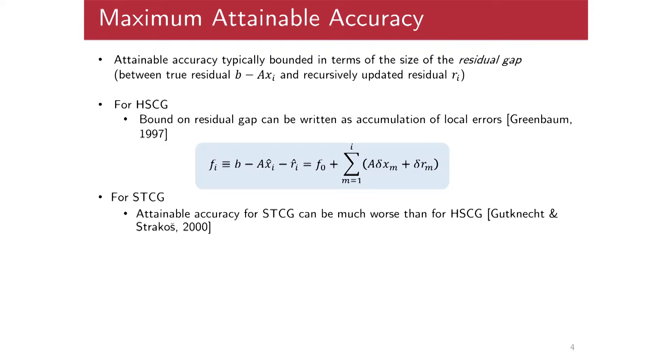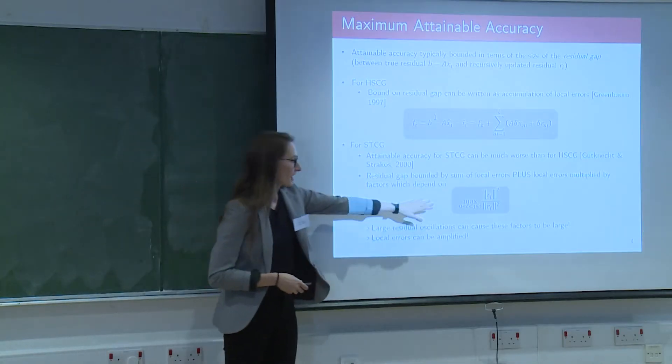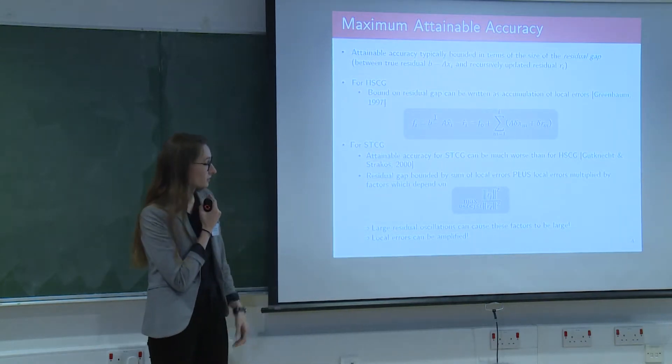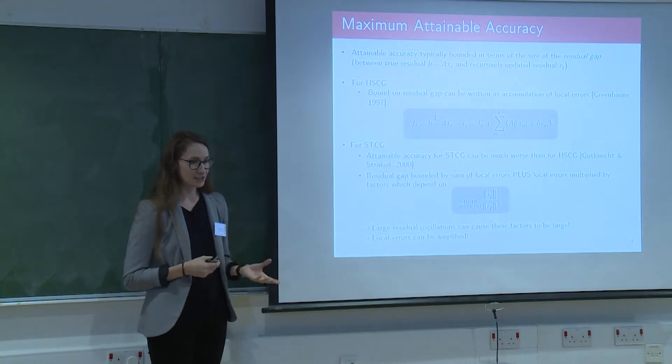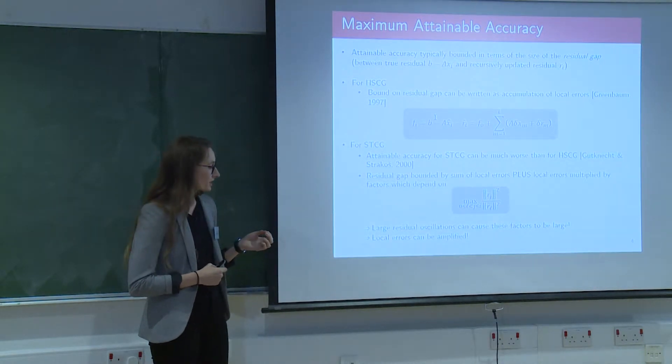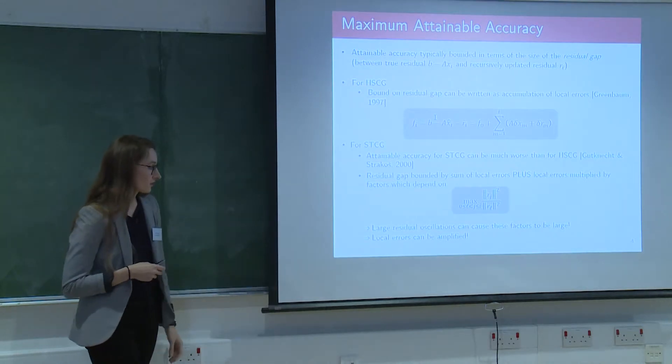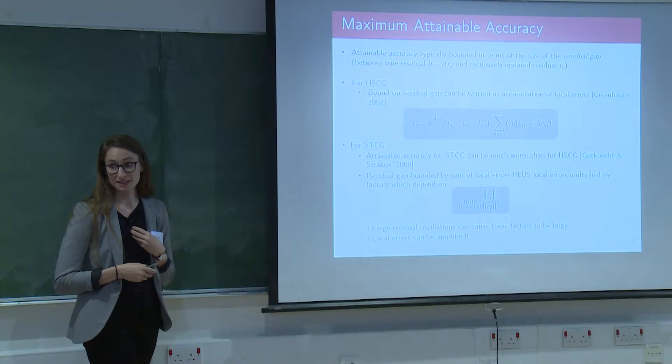Okay, so it was shown that for this alternative version that uses three-term recurrences, that the attainable accuracy can be much worse than in the version that uses two-term recurrences, and this was shown in a paper in 2000 by Gutnick and Zdenek-Strakos. And specifically, if you look at the details of this error analysis, you can show that the residual gap is bounded by a sum of local errors plus the local errors amplified by factors that depend on these ratio of residuals here. And so we know, in particular in the conjugate gradient method, we're not minimizing the residual norm, we're minimizing the A norm of the error, so there's no reason to expect this residual norm to decrease monotonically. And in particular, in cases where we have large oscillation in the residual, that means that this method can suffer from large amplification of rounding errors in contrast to the Hystenes and Stiefel version.